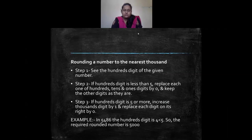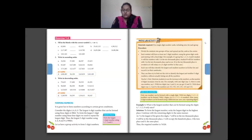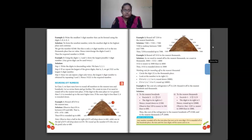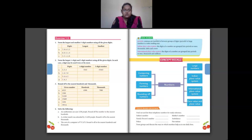Now we will see problems from the textbook. Exercise 1.5, Question 1: Form the largest and smallest 5-digit numbers using all the given digits. Part A: digits 7, 8, 6, 5 and 2. For the largest number, the greatest digit is 8, then 7, 6, 5, 2 — so the largest number is 87,652.